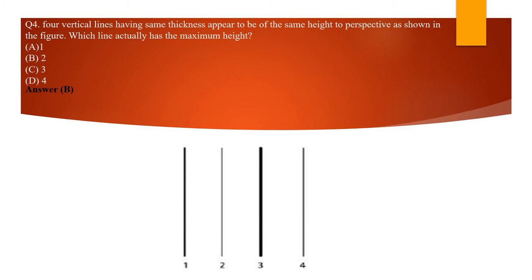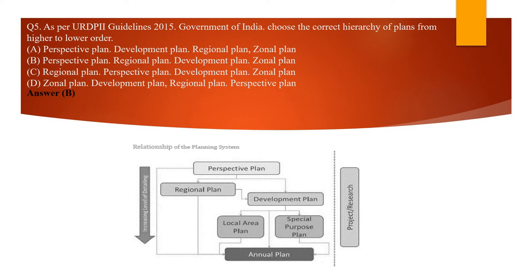The next question: four vertical lines of the same thickness and same height are shown in perspective — which has the maximum height? We know that the closer an object is to you, the thicker the line appears, and the farther it is, the thinner it appears. Since line 2 is the thinnest, it is farthest away. In perspective, since they are all of the same actual height, the one that appears smaller is actually the tallest — so line 2 is the longest one.